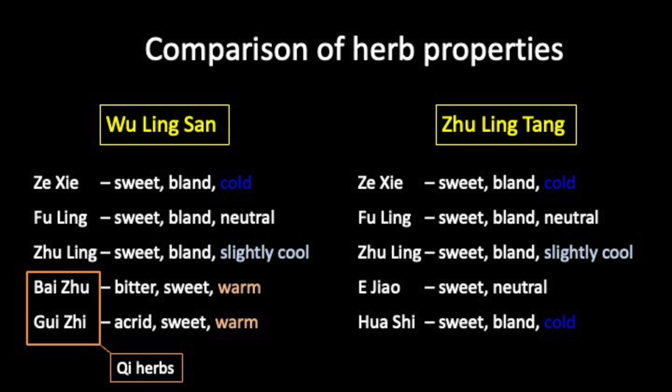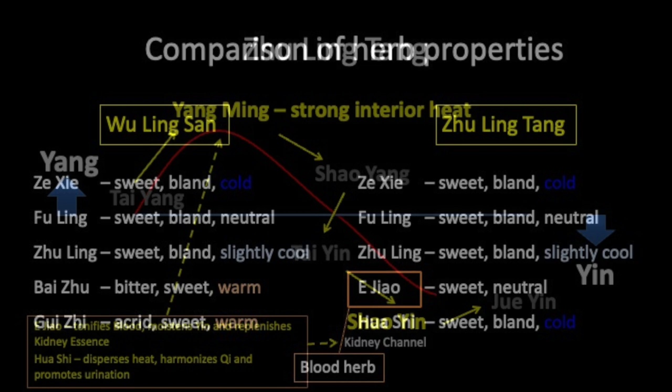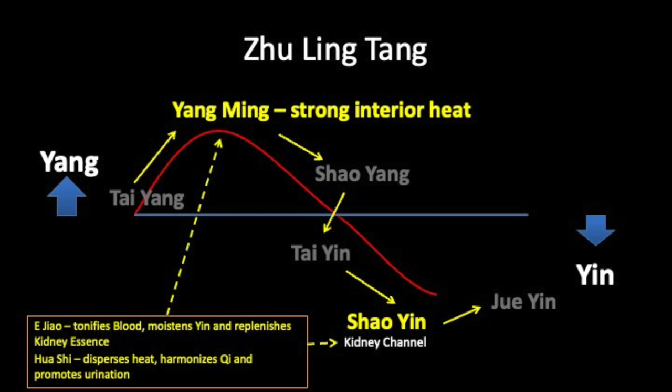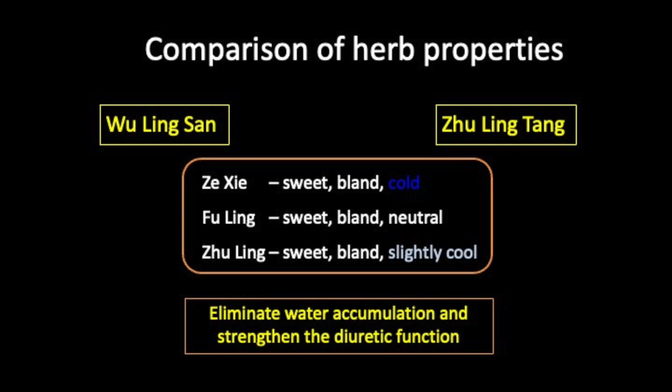E Jiao, on the other hand, tonifies blood and is suitable for a situation where there is deficiency — a deficiency that has come about because the disease has already eroded the body's Zheng Qi. Hua Shi clears heat and its slippery property promotes urination. In both formulas, Fu Ling, Zhu Ling, and Ze Xie help eliminate water accumulation and strengthen the diuretic function.